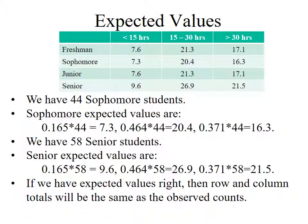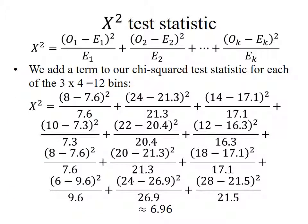That's the most intricate part of the process. Now we do exactly what we did before. Every single count fits into one of these 12 bins. To get a chi-squared test statistic, we do observed minus expected squared divided by expected for each of the 12 categories. For the first category, we observe 8 freshmen who studied less than 15 hours minus an expected of 7.6: (8 − 7.6)² / 7.6. We go through all 12 categories, add them all up, and get 6.96.